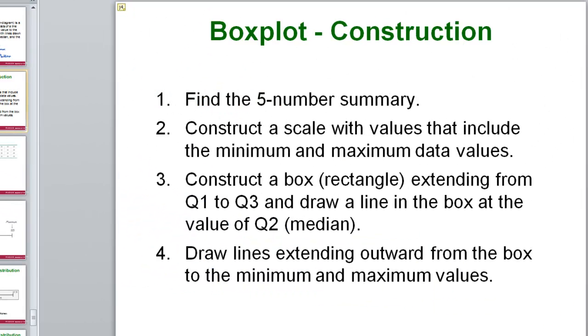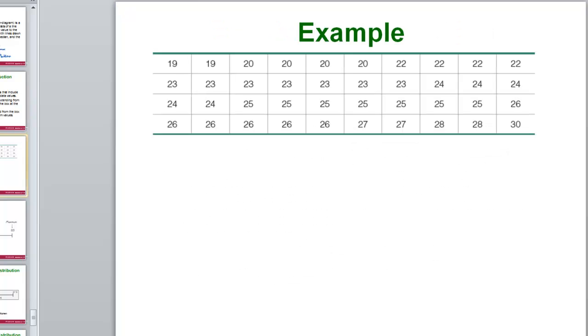Let's look at some examples. In order to construct a box plot, the first thing you need is your five number summary and then we are just going to draw the box plot on the number line. Here is an example. Let's do our five number summary really quickly. You will notice the numbers are already in order. So your minimum is 19 and the maximum is 30.